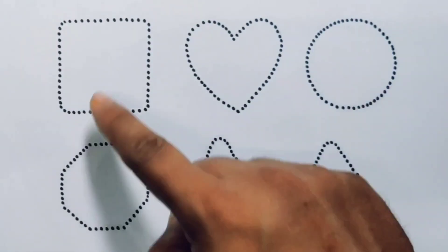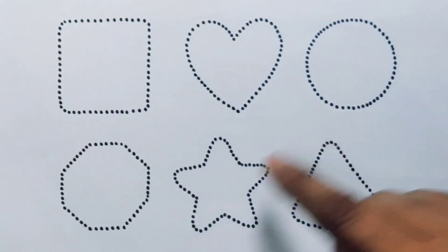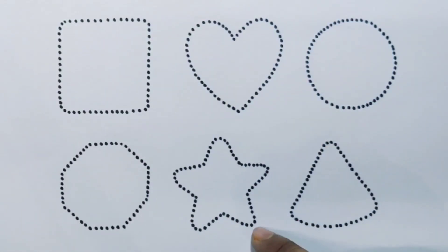Now let's learn the 2D shapes: Square, Heart, Circle, Hexagon, Star, and Triangle.